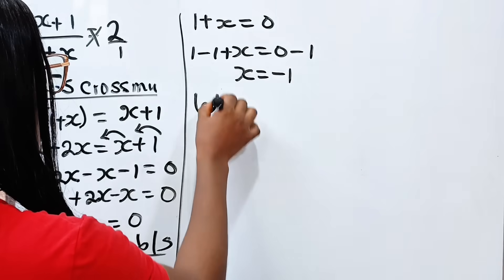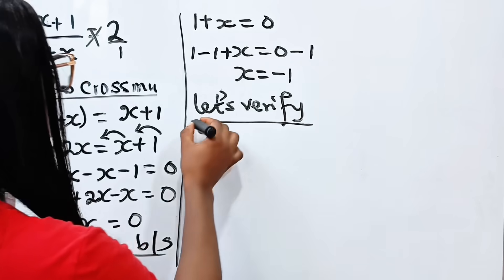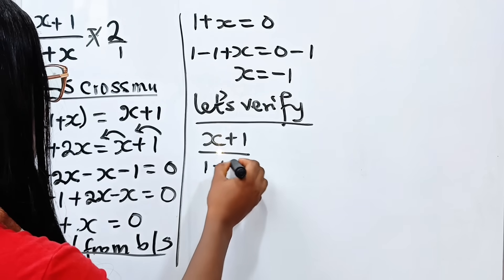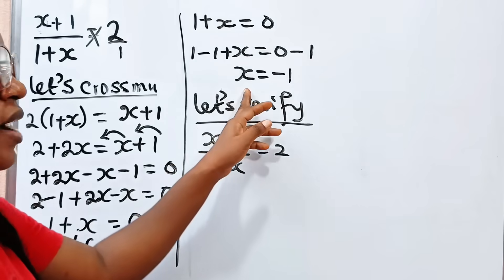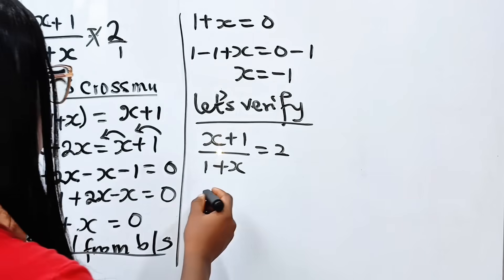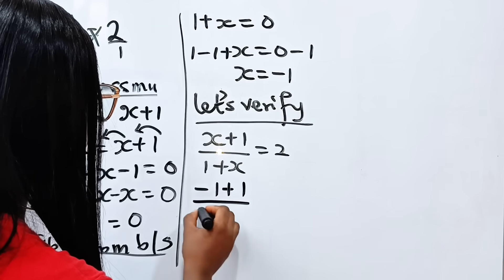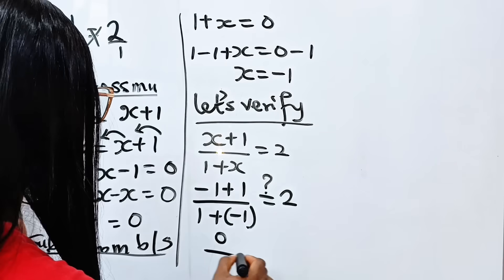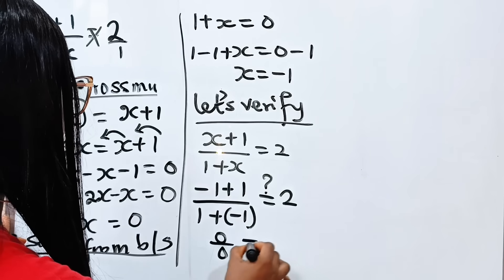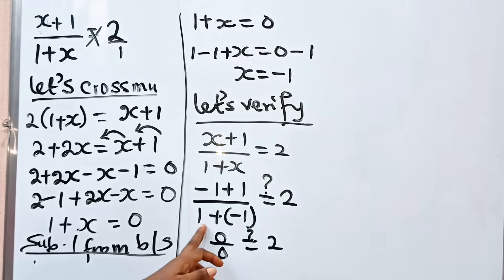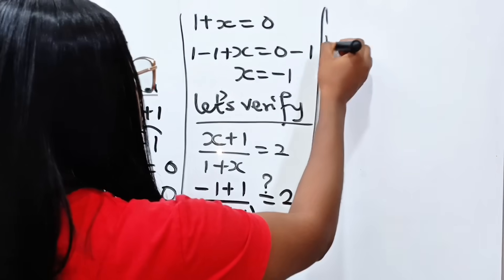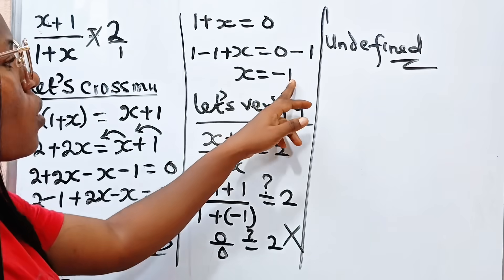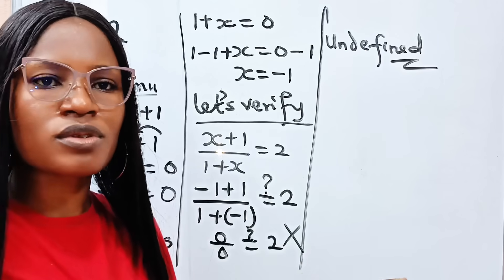Now let's verify. So if we verify this, let's see what we have. The equation says x plus 1 over 1 plus x is equal to 2. Now if x is equal to minus 1, we have minus 1 plus 1 over 1 plus minus 1. Minus 1 plus 1 is 0, and 1 minus 1 is also 0. Now 0 divided by 0 is undefined — and that shows that x equals minus 1 is rejected. It's not a root.